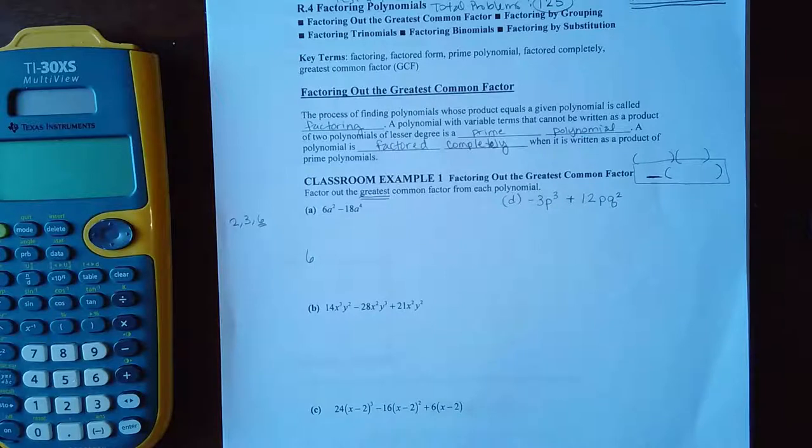So yes, I know that both 6 and 18 can be divided by 2. Yes, both 6 and 18 can be divided by 3. And yes, both 6 and 18 can be divided by 6. But I have to use the greatest.